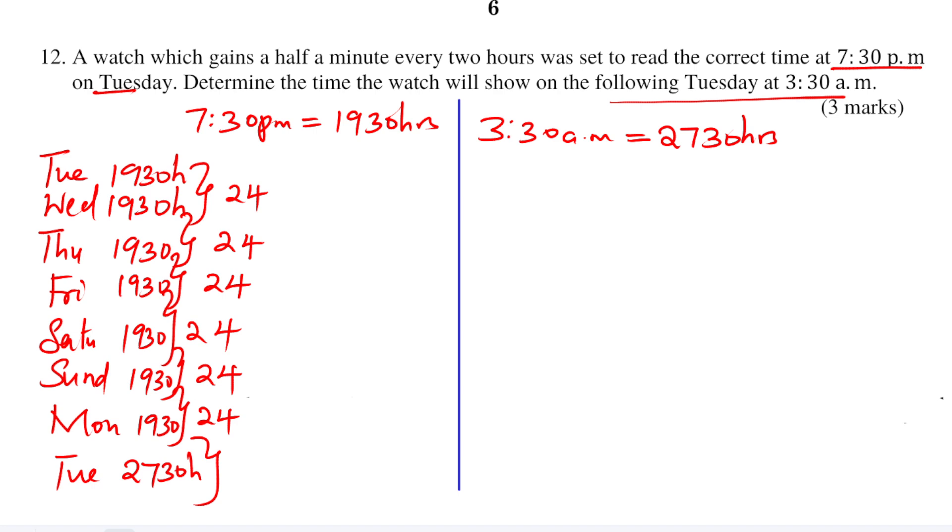This is not a full day, so this is 27:30 subtract 19:30, these will be 8 hours. So these now will represent the total number of hours from Tuesday 7:30 PM to the following Tuesday 3:30 AM.